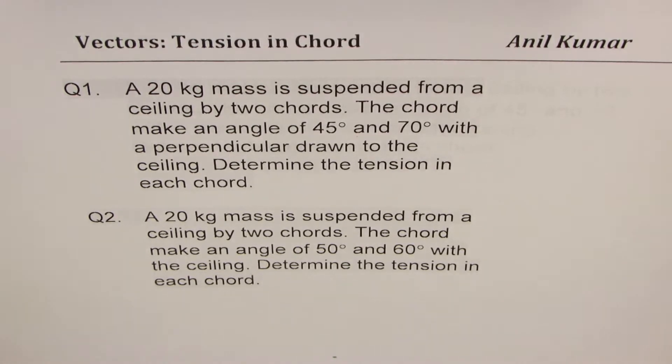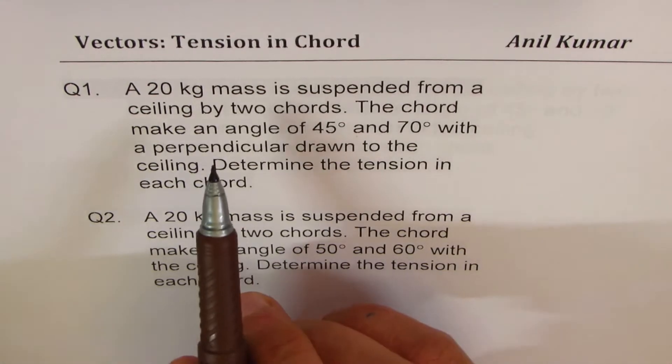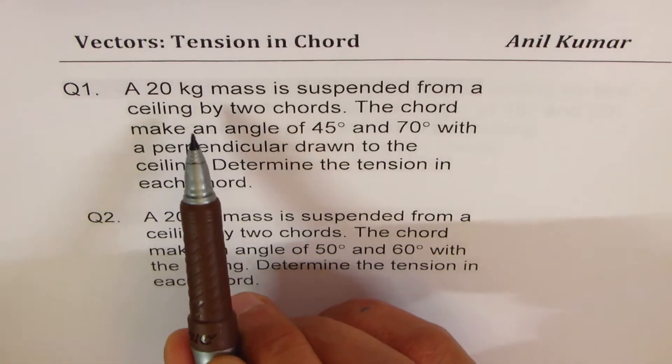Question number two: a 20 kg mass is suspended from a ceiling by two cords. The cords make an angle of 50 degrees and 60 degrees with the ceiling. Determine the tension in each cord. I've purposely taken two very similar questions, and we need to sketch appropriate diagrams.